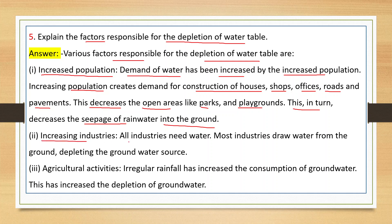Second factor: increasing industries. All industries need water and most draw water from the ground, depleting the groundwater source. Third factor: agriculture activities. Generally agriculture depends on rainfall, but irregular rainfall has increased the consumption of groundwater, further increasing its depletion.